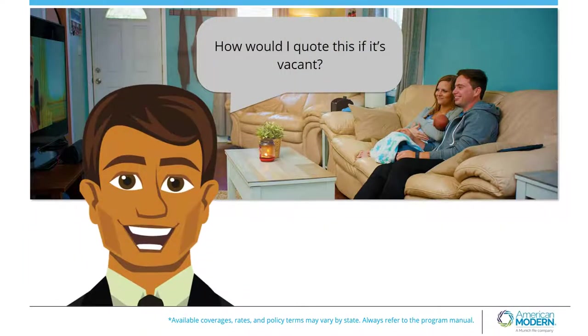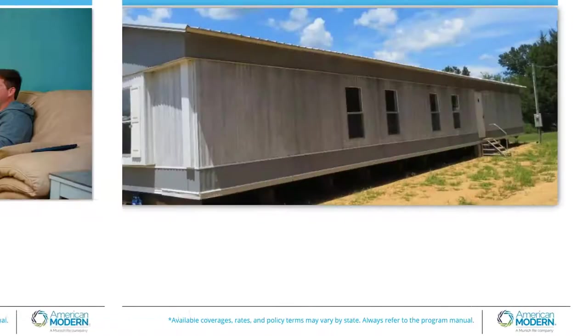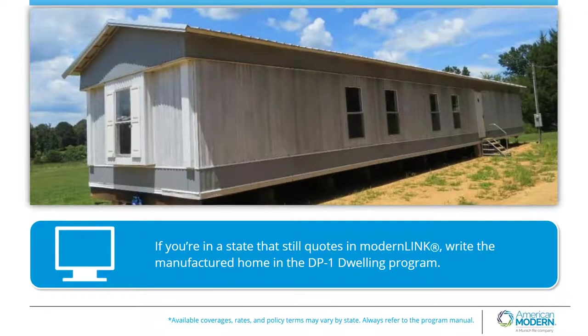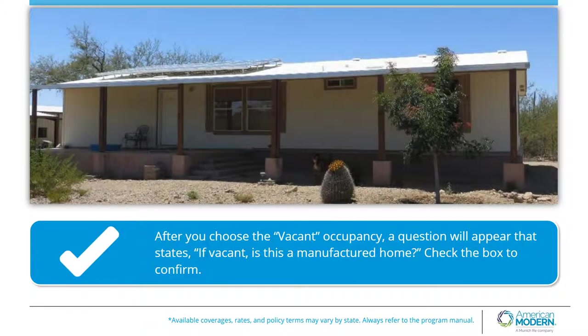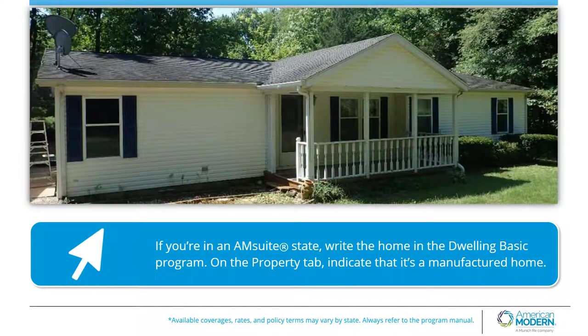And how would I quote this if it was vacant? If you were in a state that still quotes in ModernLink, you would write the manufactured home in the DP1 Dwelling Program. After you choose the occupancy to vacant, a question will appear that states: if vacant, is this a manufactured home? Check the box to confirm. If you are in an AmSuite state, write the home in the Dwelling Basic Program and on the Property tab indicate that it is a manufactured home.